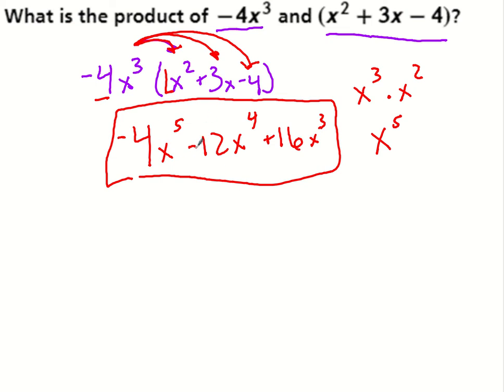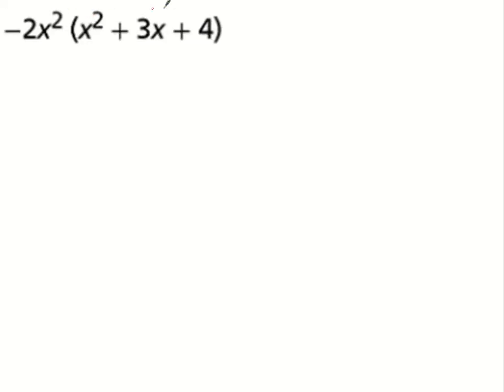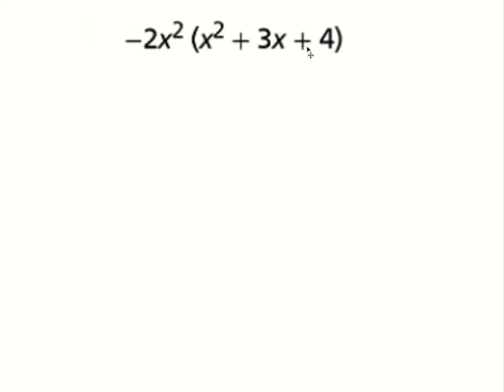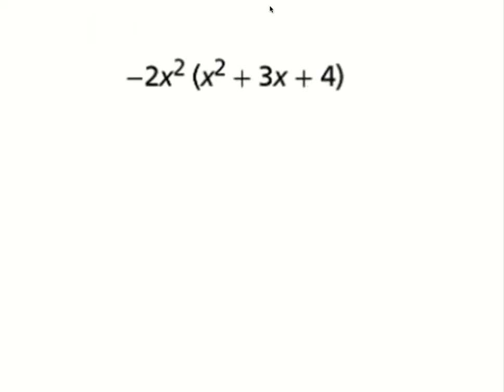I am in standard form. I cannot combine like terms because the terms have x to the fifth, x to the fourth, and x to the third — so I'm all done. Go ahead and try this one. Same process — see how you do.